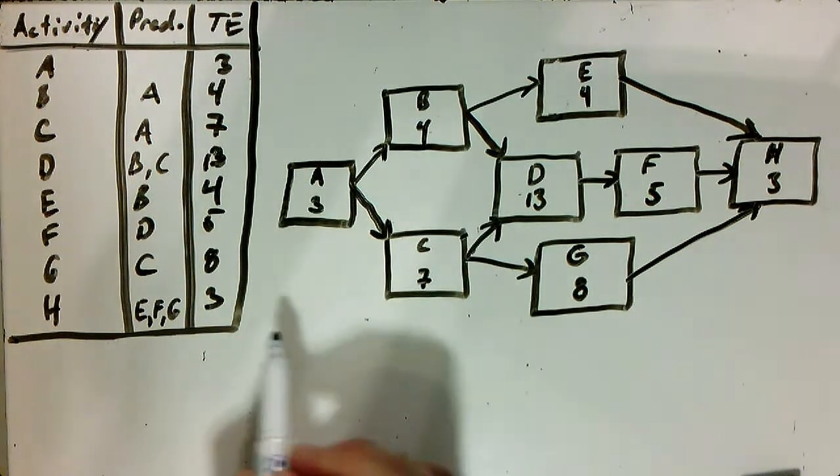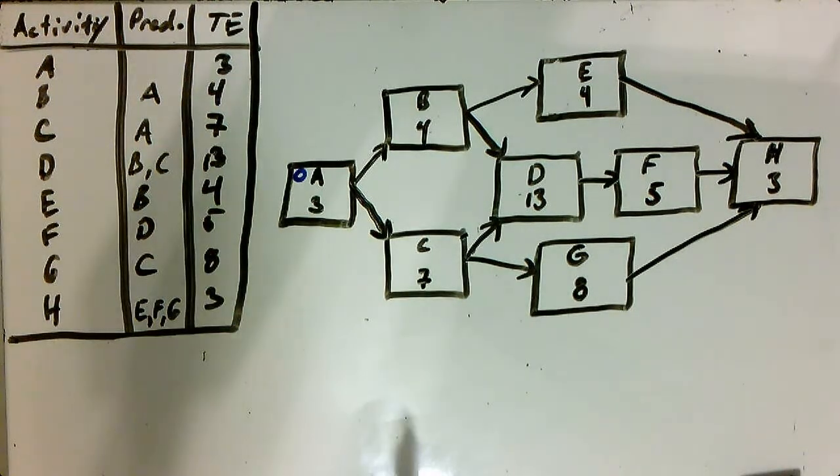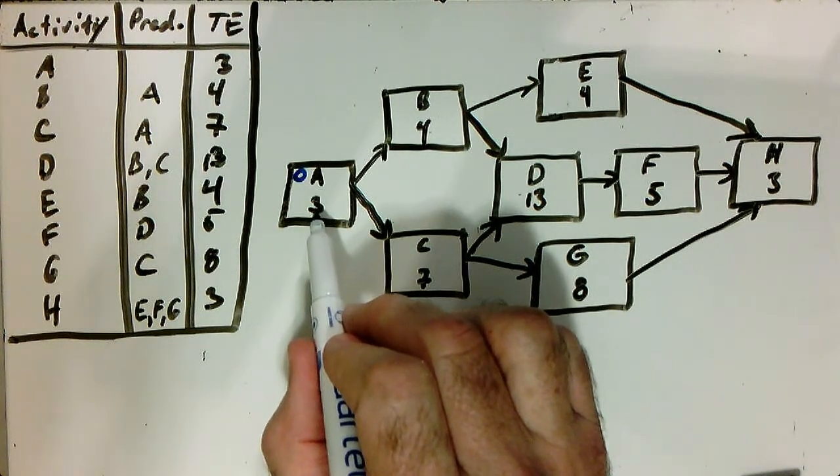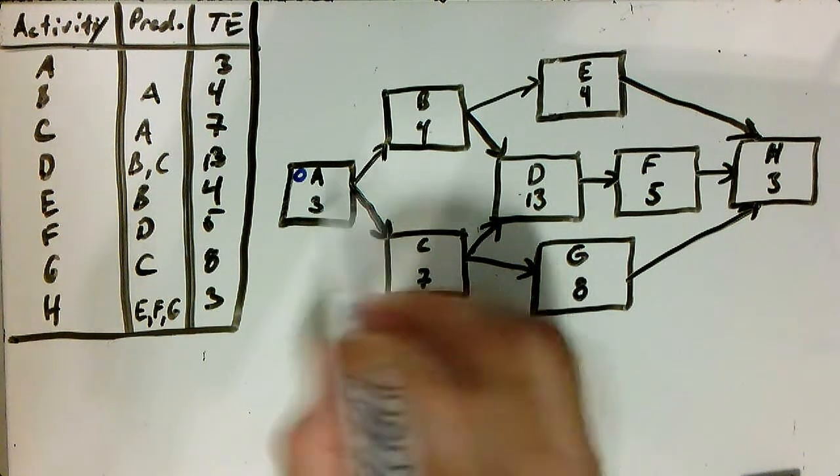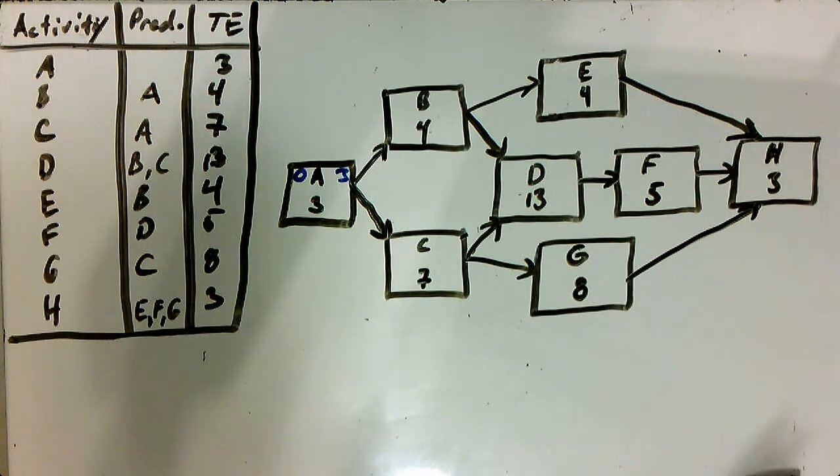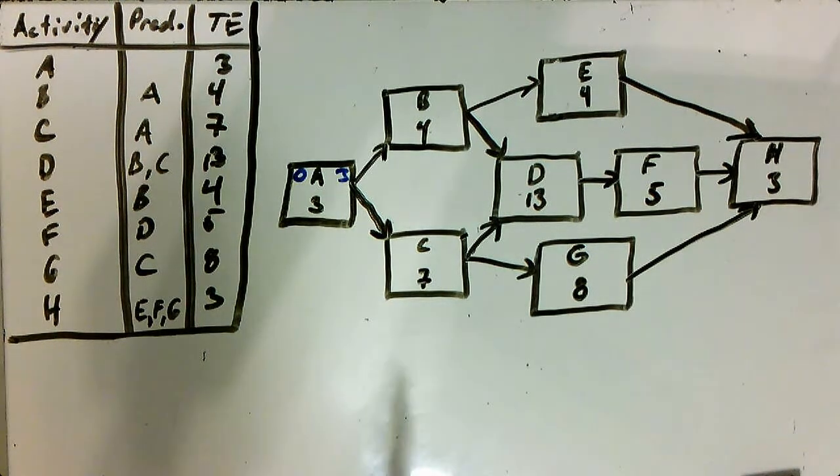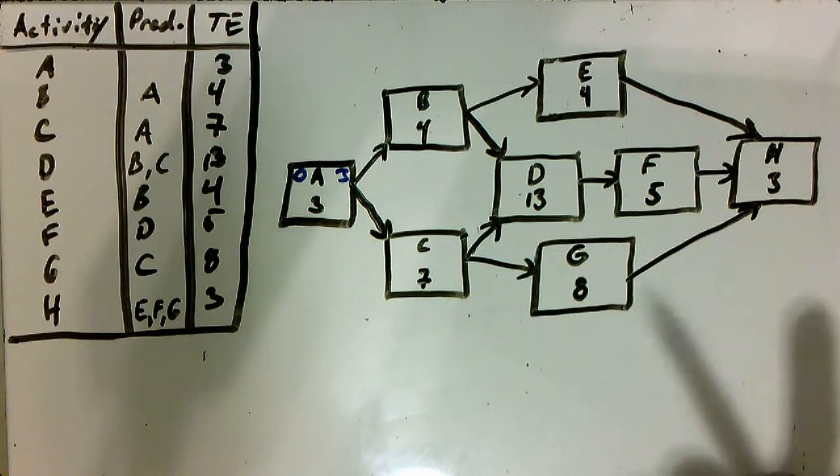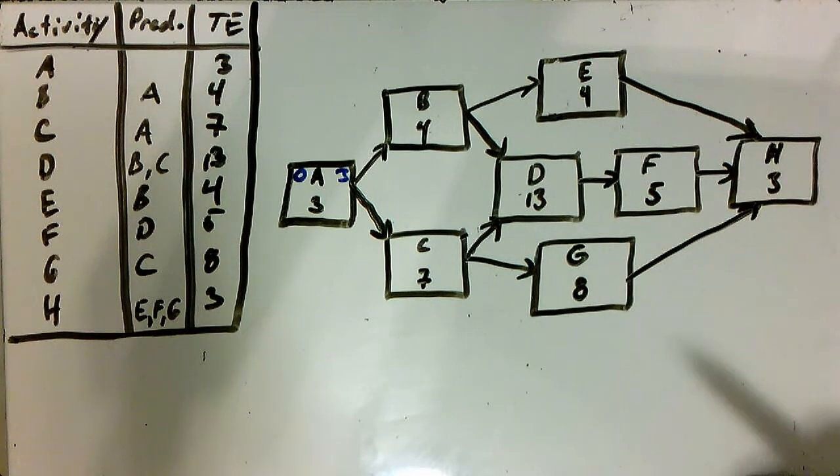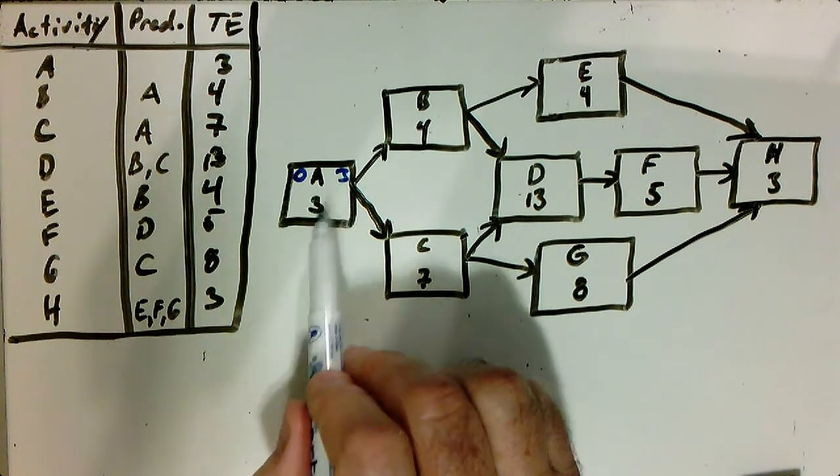So we start with the first node, A, and we start at t equals zero, because that's before we've started. Then in the forward path, all we simply do is add the duration, the expected duration of that activity. So zero plus three is three. Have you noticed in the book and in the jargon, these nodes actually have several different names. We've called them work packages, tasks, and are also called activities. So just keep that in mind. Okay. So for activity A, we went from zero, three to three.